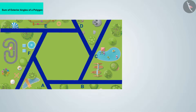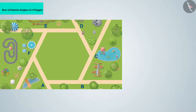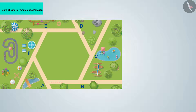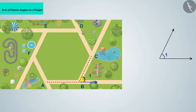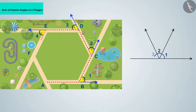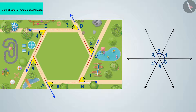Suppose you are in a hexagonal garden. Starting from vertex A and moving anti-clockwise along the boundary: at B, rotate angle 1 and move towards BC; at C, rotate angle 2 and move in the direction of CD. Continue this process until you return to vertex A, displaying the angle formed each time on the right.